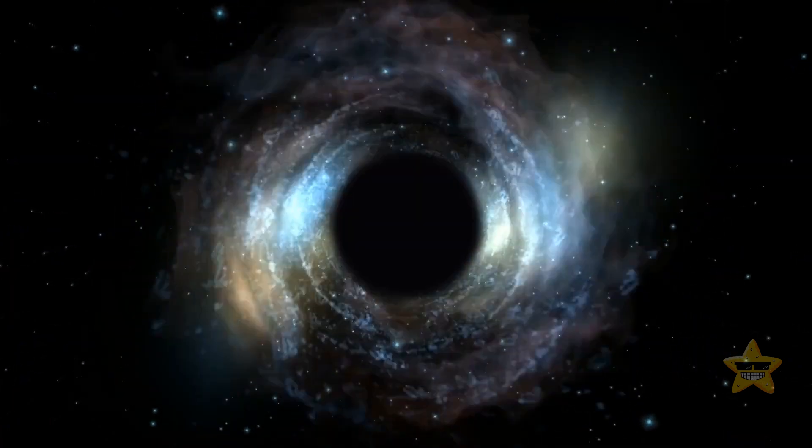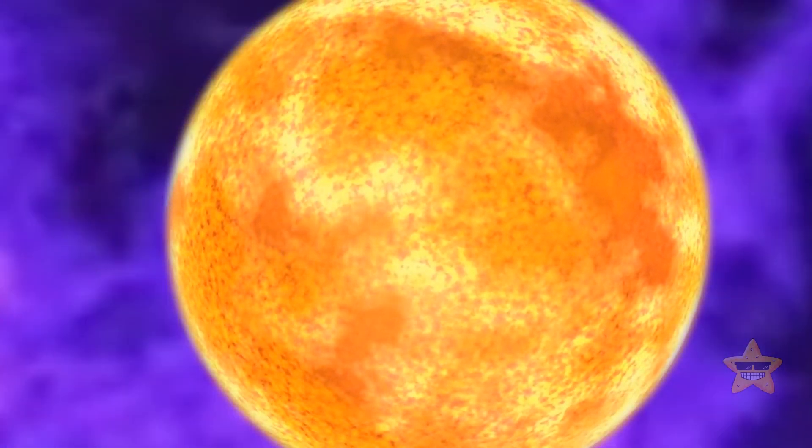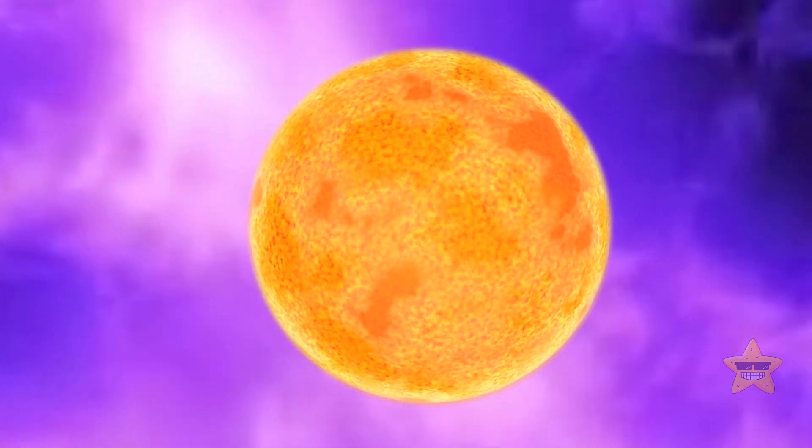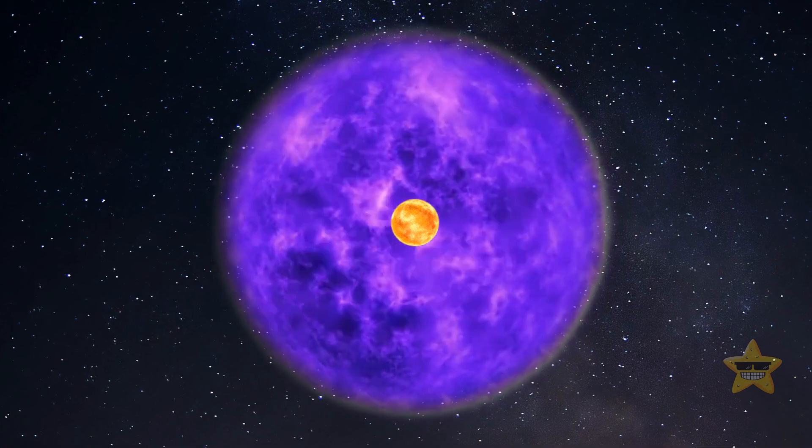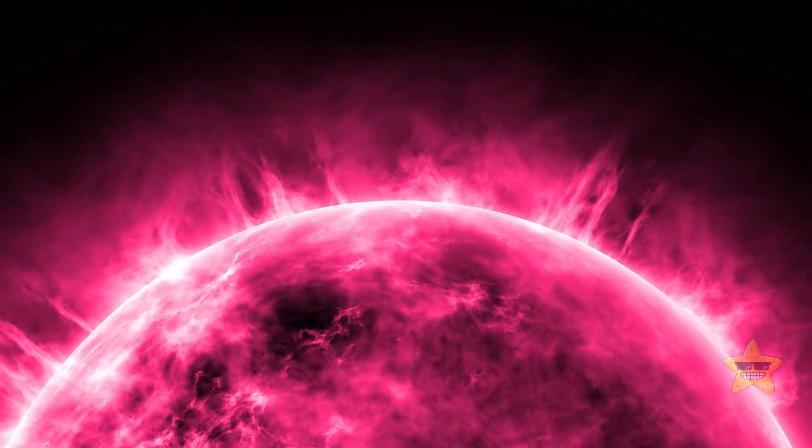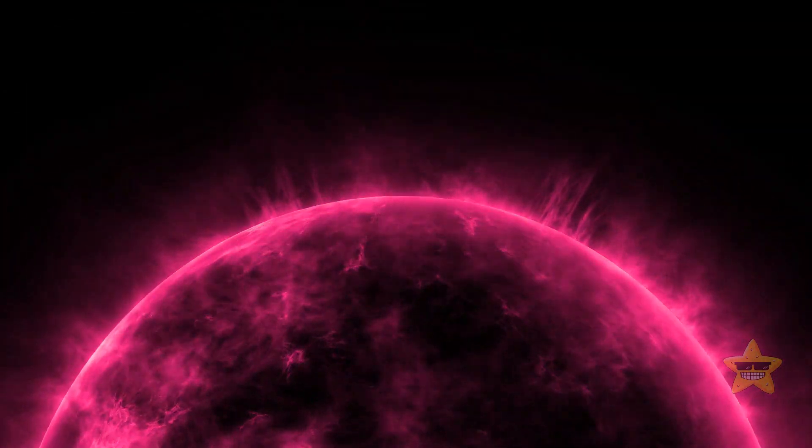The very first star should have formed around 50 to 100 million years after the Big Bang. These stars could become incredibly massive, hundreds or even a thousand times bigger than our sun. And when these stars formed, it didn't take long, maybe 1 or 2 million years, before they disappeared.